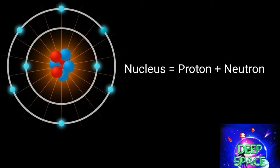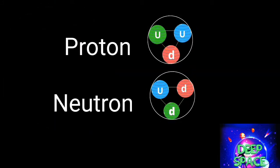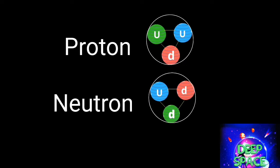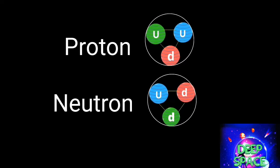Protons and neutrons can be further broken down and are made up of quarks. As far as we know, quarks can't be broken down into smaller components, making them the smallest things.